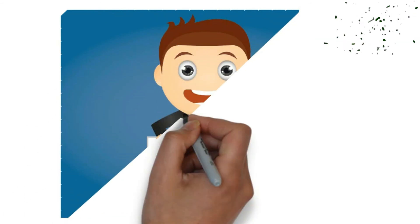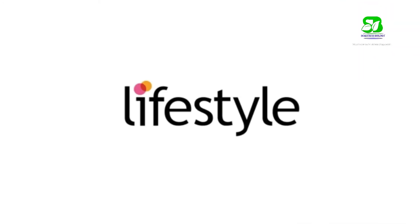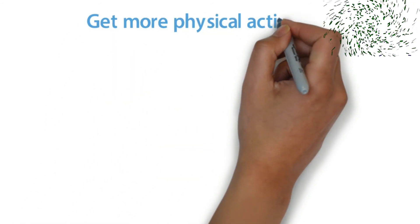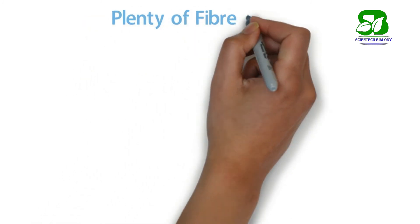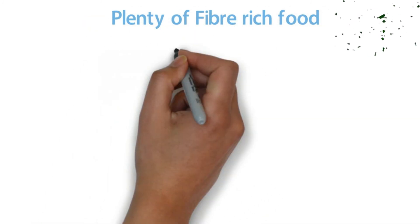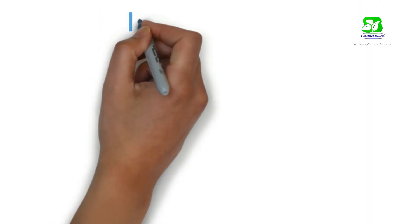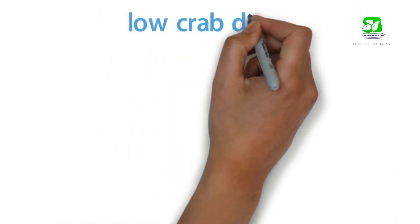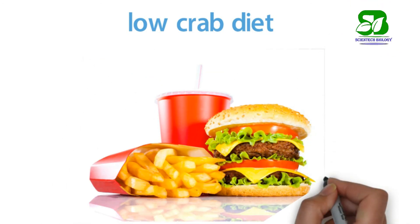We can control diabetes by changing our lifestyle. Get more physical activity by increasing aerobic exercise. Take plenty of fiber-type foods like peas, broccoli, lentils, tomatoes, etc. A low-carb diet or low glycemic index diet helps you to lose weight.